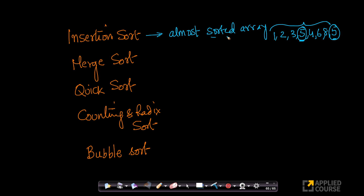If you have an almost sorted array, insertion sort is very good because the best case — when the array is already sorted — gives you O(n) time complexity and O(1) space complexity. Insertion sort works well when your array is almost sorted.